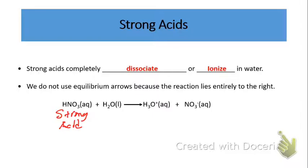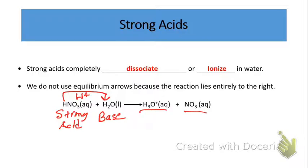Nitric acid is going to react with water. It's the only base in our solution, and it's going to form the conjugate acid — the hydronium ion — and our conjugate base, which is the nitrate ion. So we have an acid-base reaction where the strong acid donates an H+ to the base, the water, forming the hydronium ion and the nitrate. There's no double arrow — there's no reversibility in this reaction.